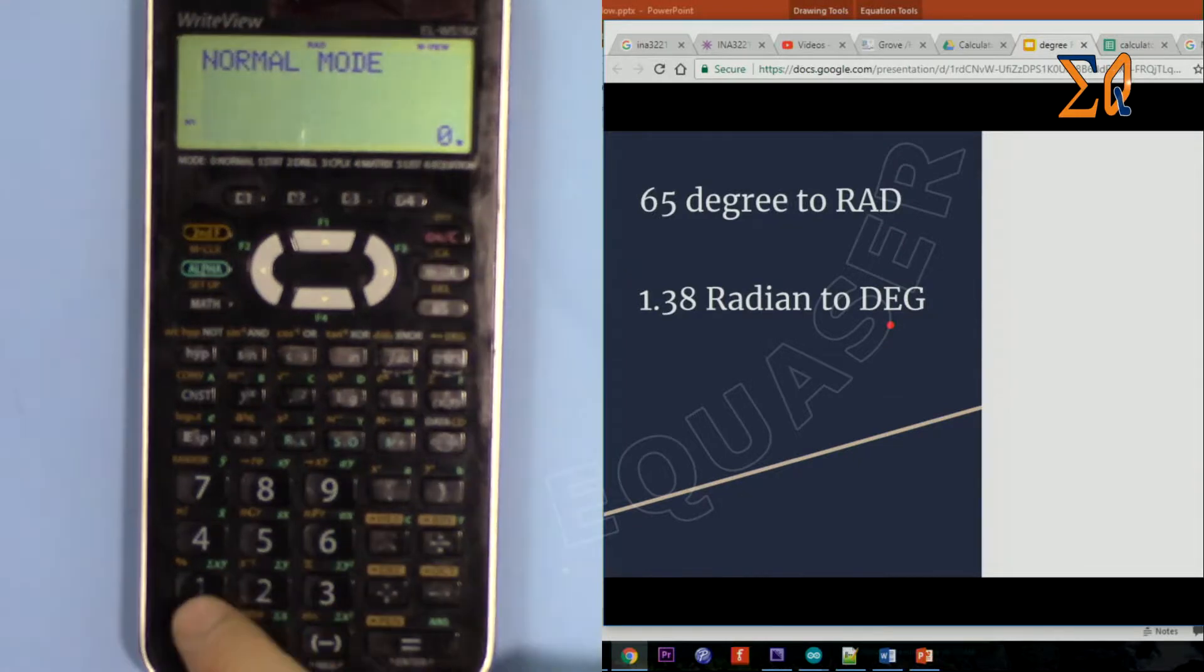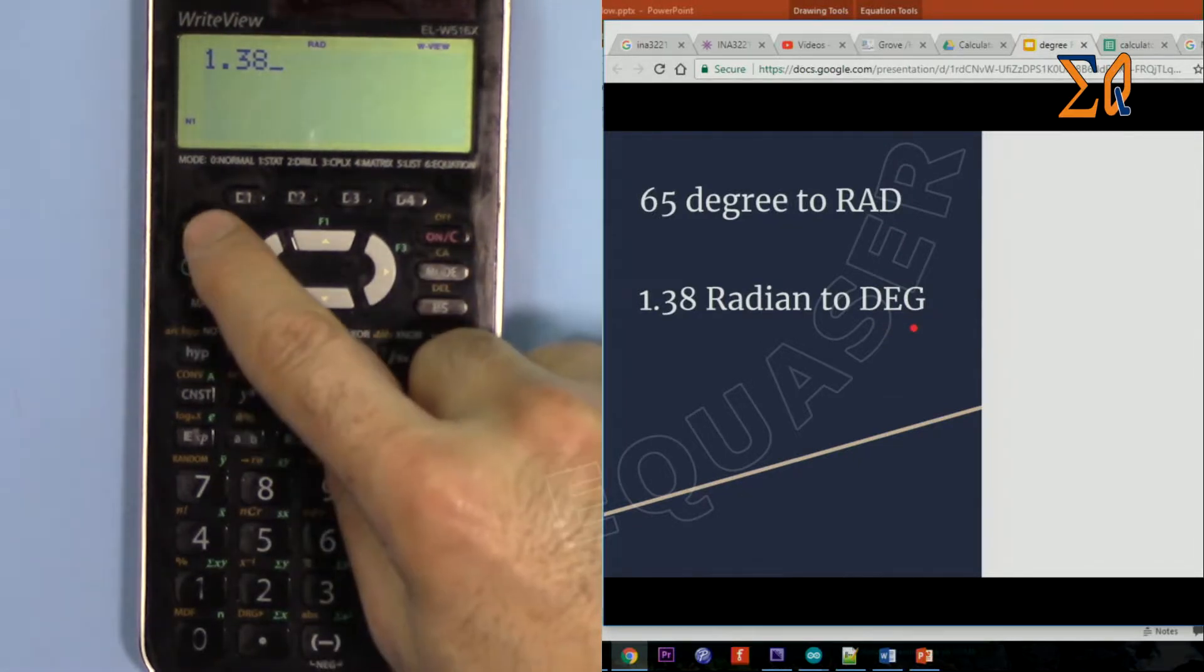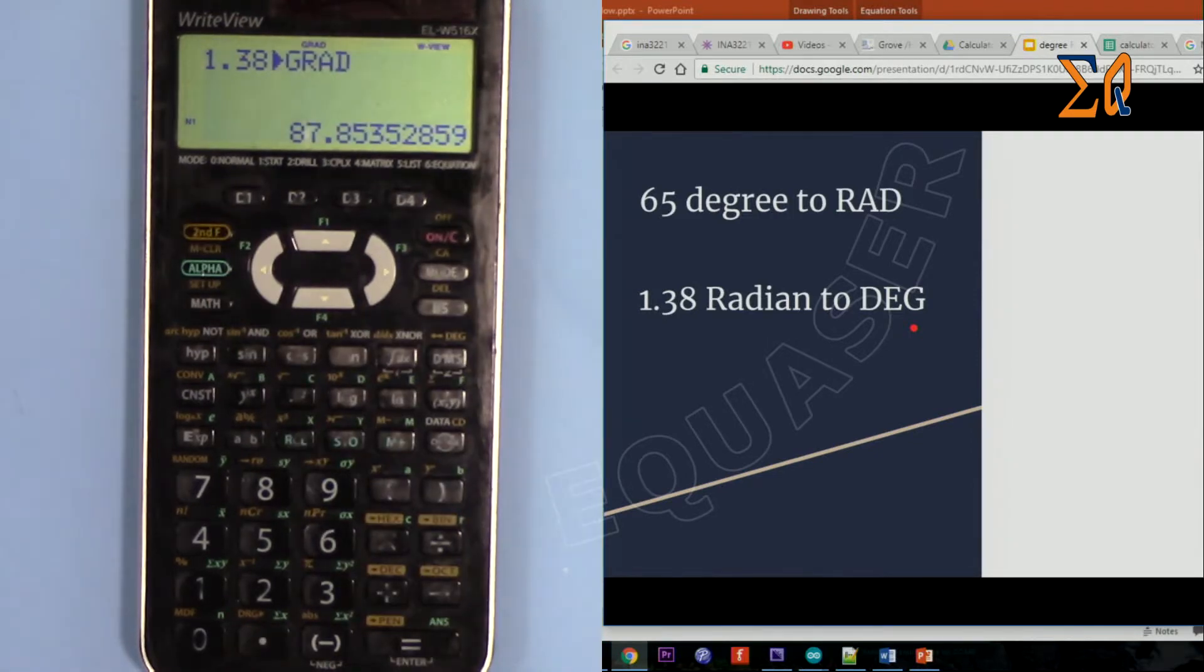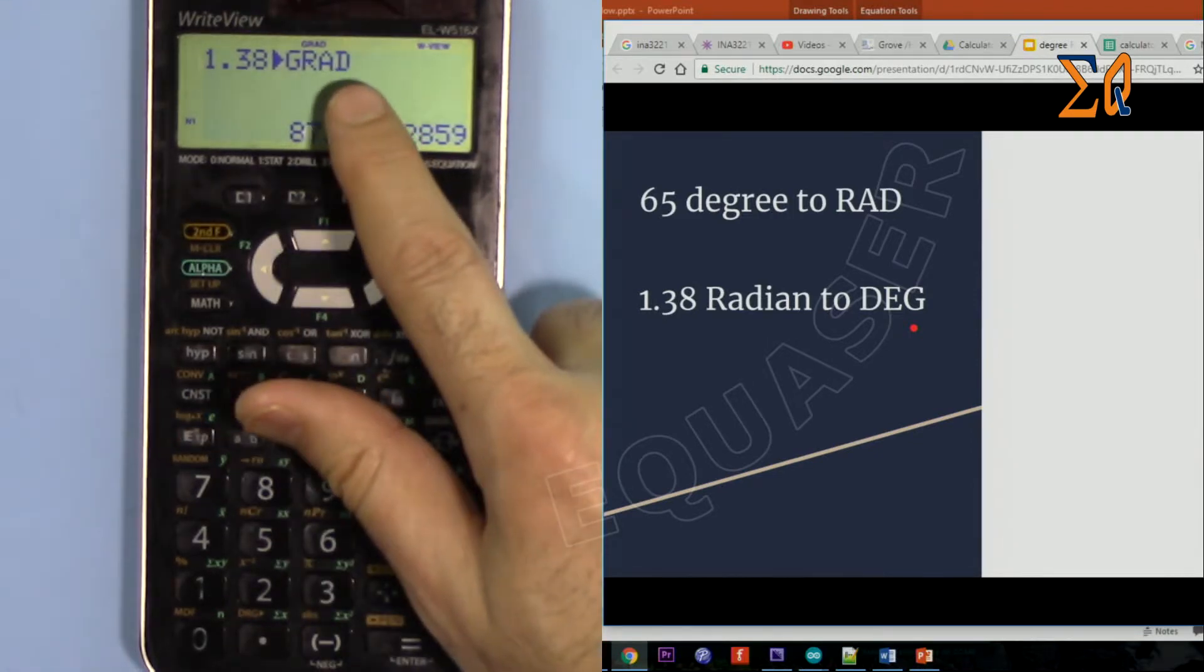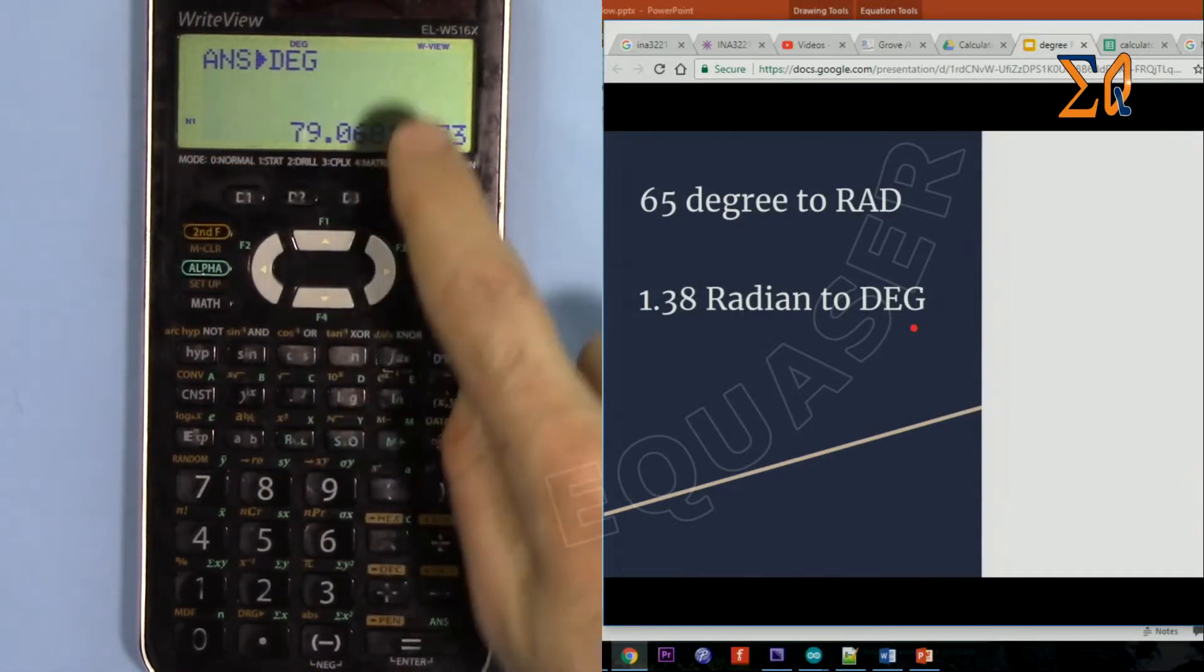So we are in radian: 1.38, and then we are converting it to degree, second function and then again this color. Now this gives us gradient, so now do it one more time.